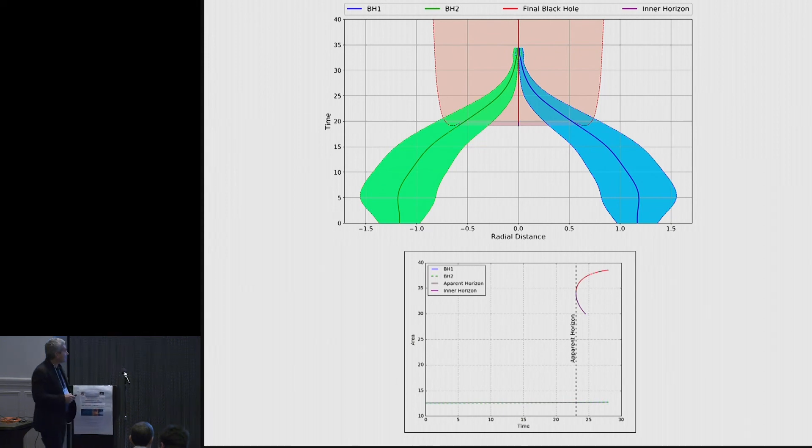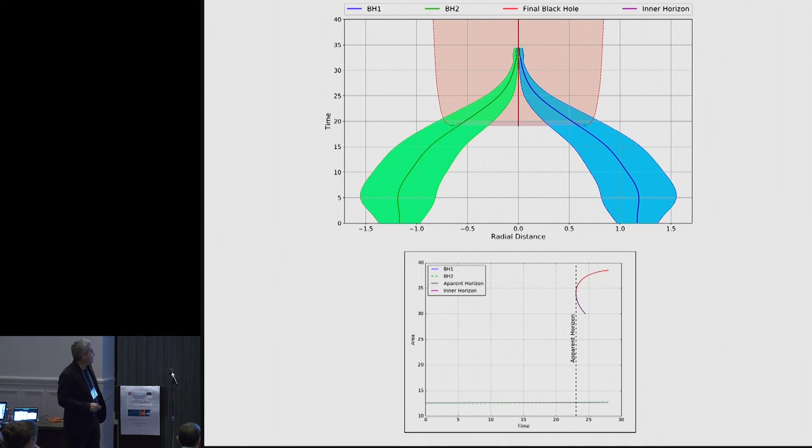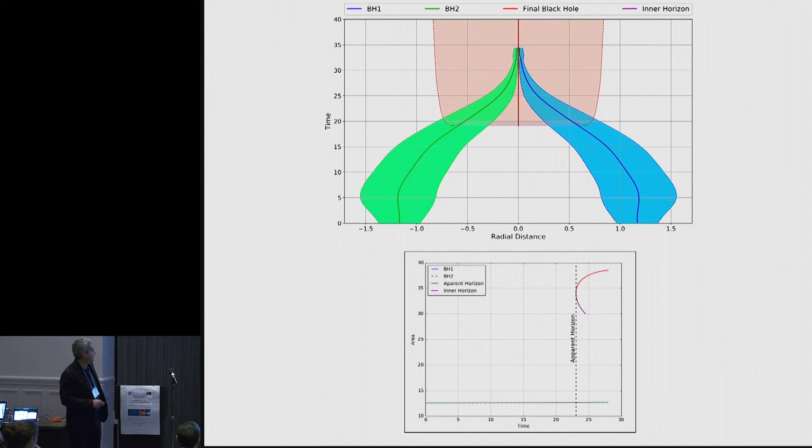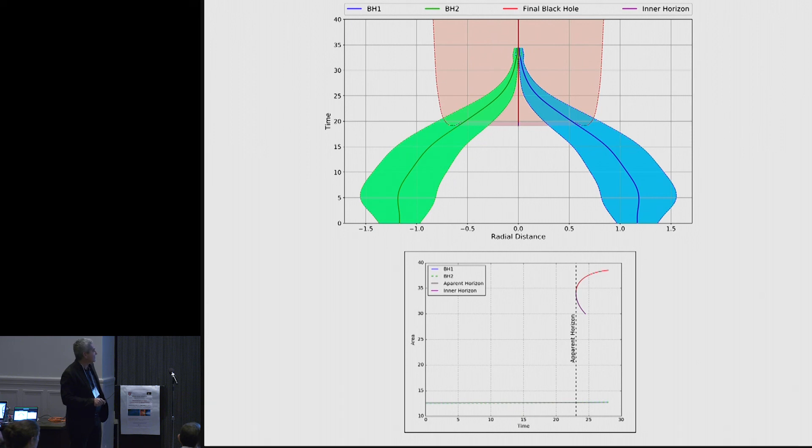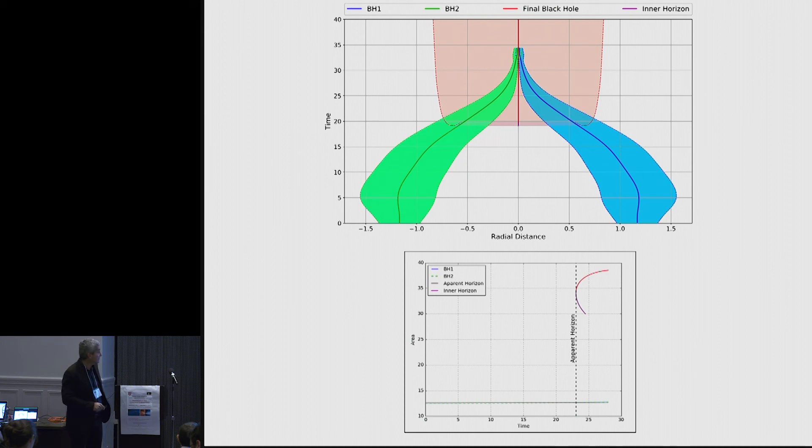And the interesting thing that we have observed, and now when we plot this in terms of the areas, as it was mentioned in the previous talk, the apparent horizons grow in area. The ones in the interior stay constant even after the appearance of that. They don't disappear. They stay constant. And we don't understand that.